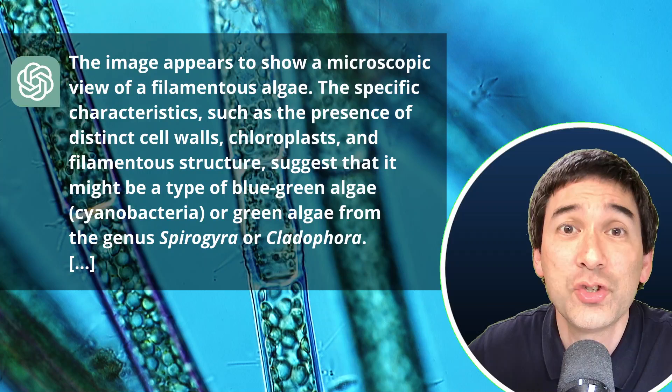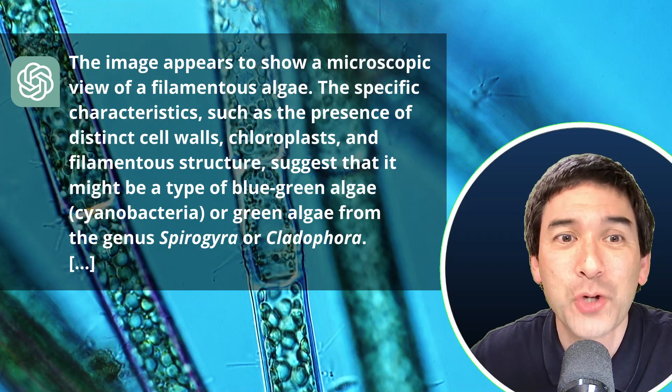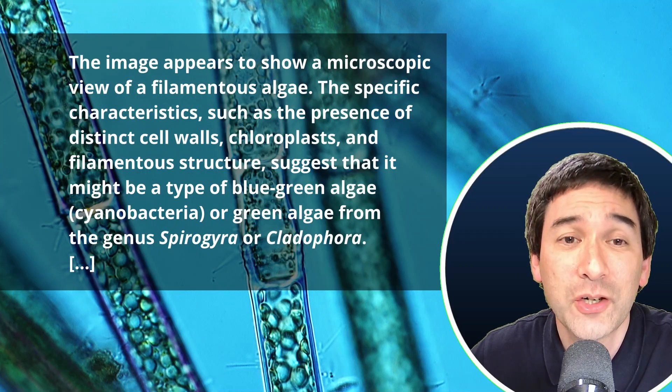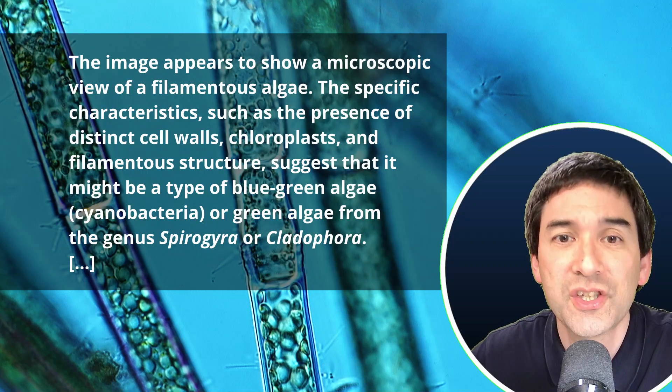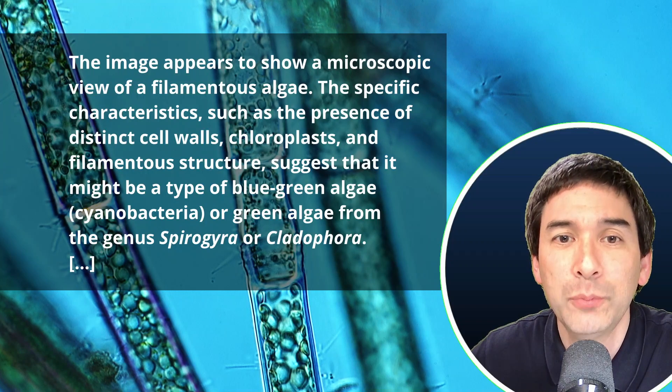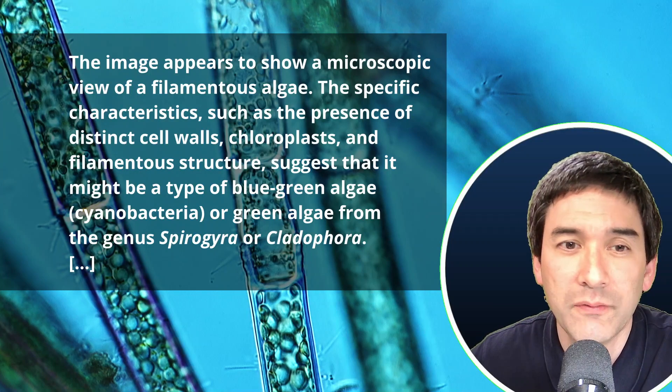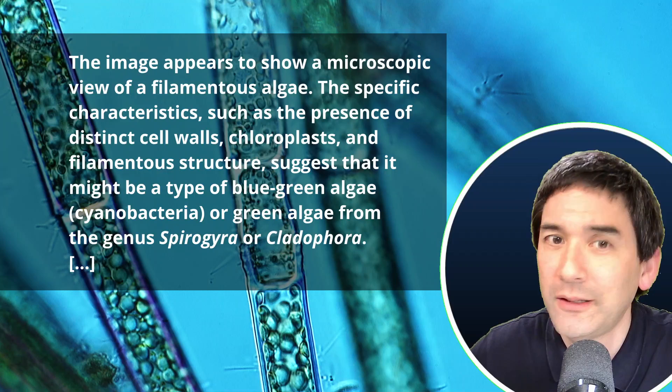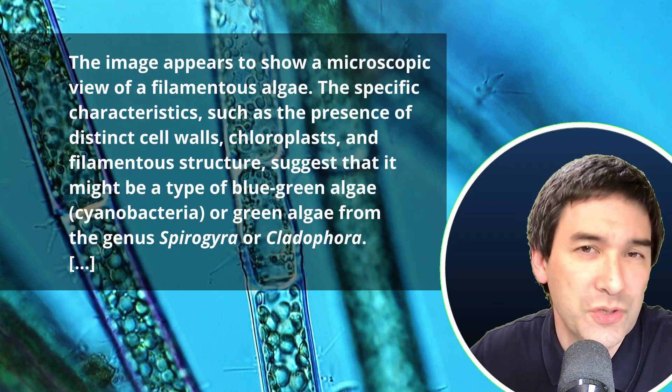And this is what it suggested. It really likes Spirogyra. The image appears to show a microscopic view of a filamentous algae. That is correct. The specific characteristics, such as the presence of distinct cell walls, chloroplasts, and filamentous structure, suggests that it might be the type of blue-green algae cyanobacteria. Clearly wrong. Cyanobacteria look very different. Or green algae from the genus Spirogyra? Definitely not. Or Cladophora? Also not.